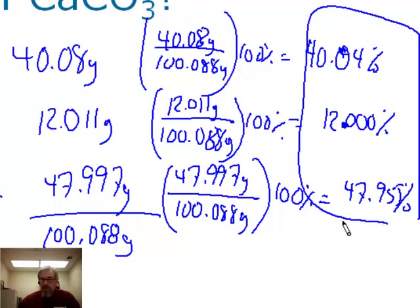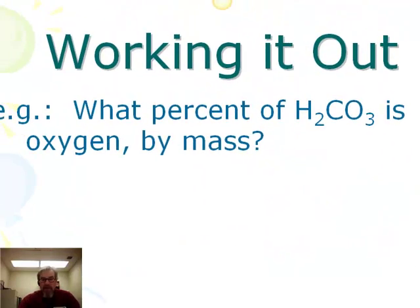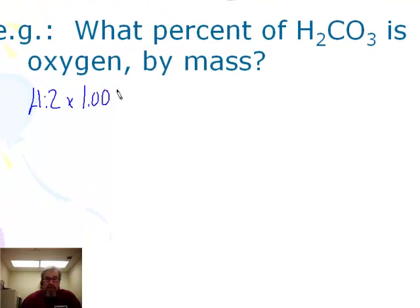So that's our percent composition — a list of percents by mass of each element in the compound. Try this one: here we're only looking for the oxygen percent by mass. To find the total, we need to account for everything. For hydrogen, we have 2 times 1.008 grams, which is 2.016 grams.